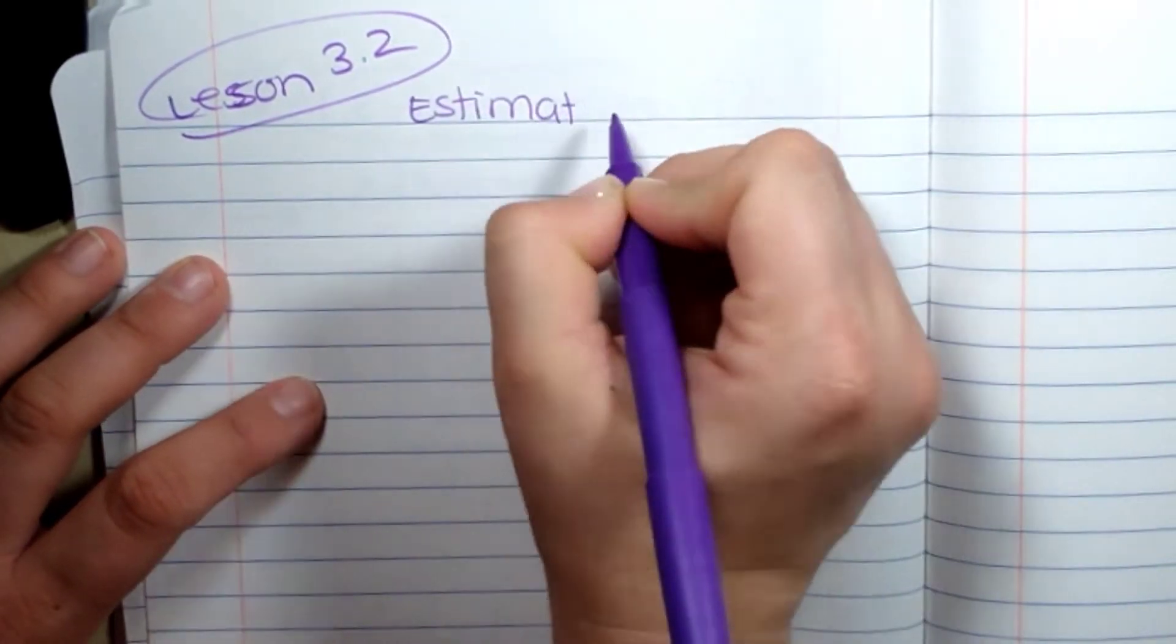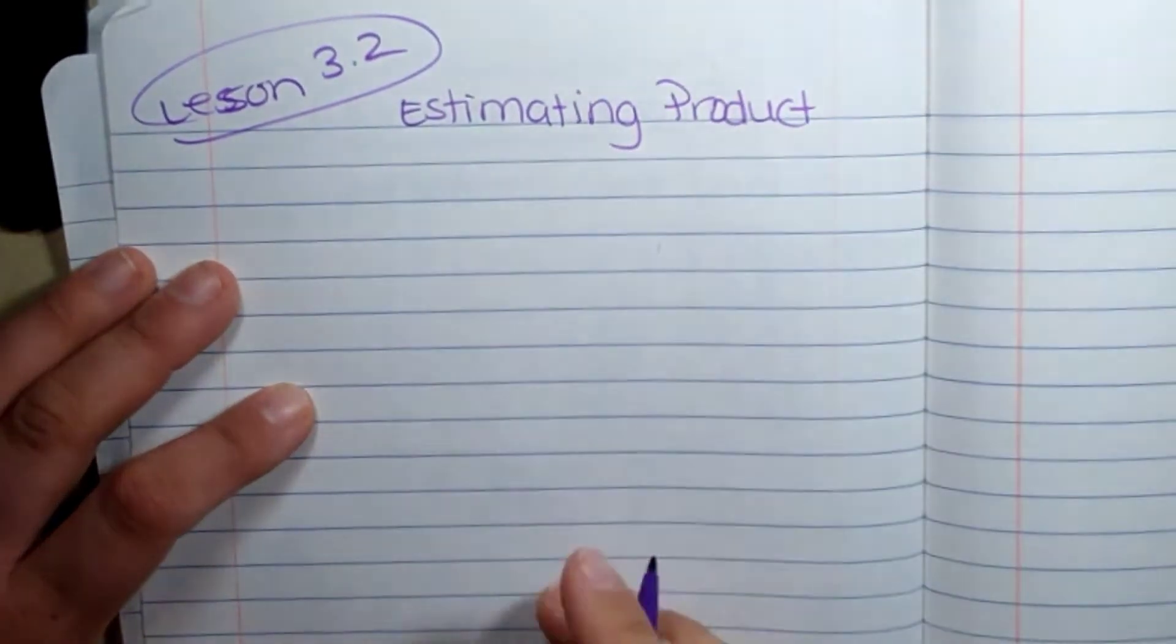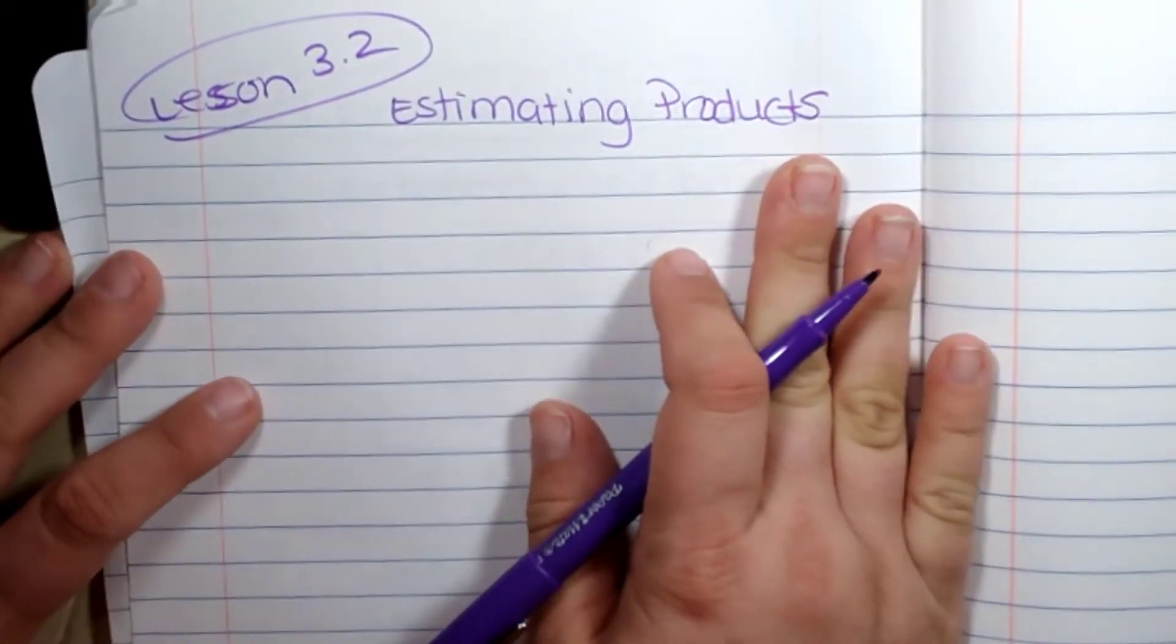Now when you estimate, you're finding an answer that's around the correct answer, about. So here are our steps.